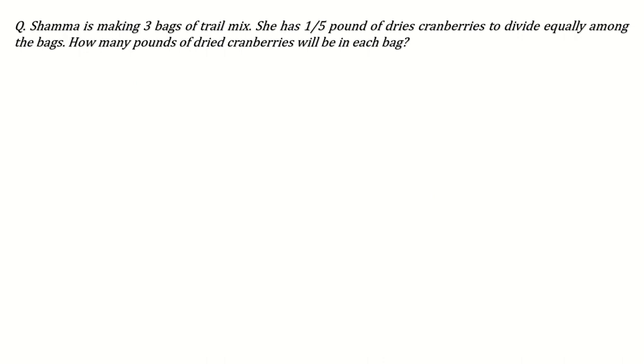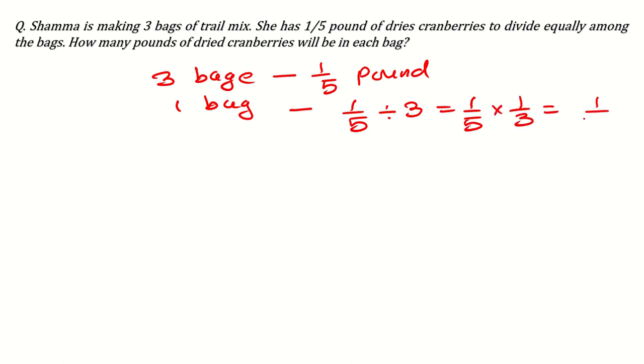Next question can be: Shama is making 3 bags of trail mix. She has 1 over 5 pound of dried cranberries to divide equally among the bags. How many pounds of dried cranberries will be in each bag? Now, 3 bags and she has total 1 over 5 pound. So in one bag how much will it be? It will be divided equally, means 1 over 5 divided by 3 means 1 over 5 times 1 over 3. It means 1 over 15. So 1 over 15 pound of dried cranberries in each bag.